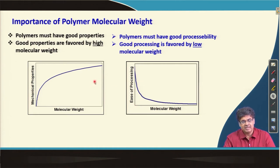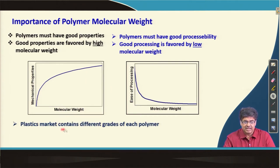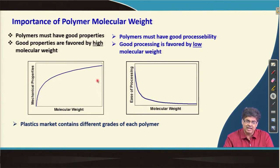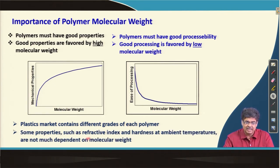This creates a dilemma for a design engineer or polymer engineer: whether to synthesize a polymer of high molecular weight or low molecular weight. Depending upon the final application and property requirement, the plastics market contains different grades of each polymer, and different grades in most cases have different molecular weights. Depending upon the final application, one can choose between these grades. Of course, a few properties like refractive index and hardness at ambient temperature do not significantly depend on molecular weight.